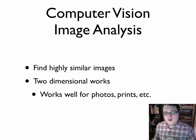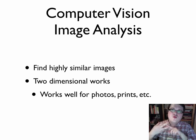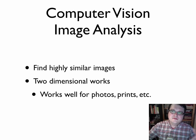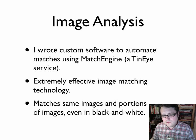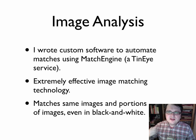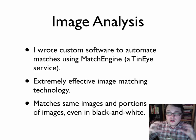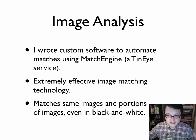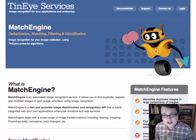This technique works well for a number of different types of images — namely photos, prints, anything where there are lots of copies and two-dimensional works generally work best. I wrote some software just over a year ago using a commercial service called Match Engine. It is very good at image matching, finding images that are very similar to one another. It can even work with portions of an image or with black and white images — they don't have to be in color. This service is provided by a Canadian company called TinEye, and they've been very interested in supporting this research.